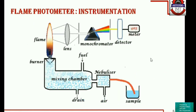We will look into the instrumentation part of the flame photometer. The sample is aspirated into the nebulizer. The nebulizer converts the liquid sample to mist form and sends it to the mixing chamber. For producing the flame, we require fuel and air — air is passed in compressed form. The jet of these gases in the mixing chamber, along with the atoms in mist form, is sent to the flame.